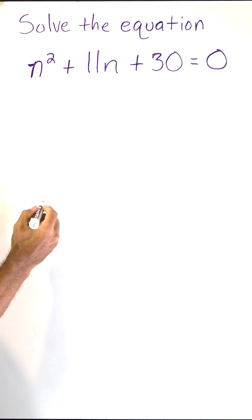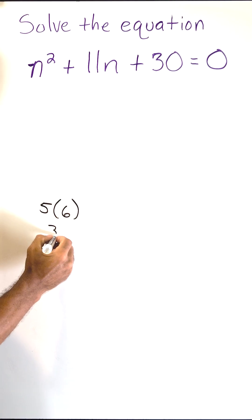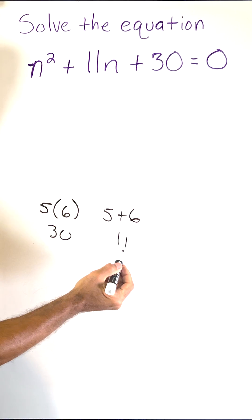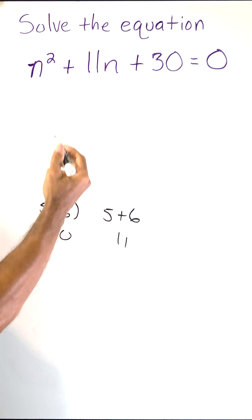And two such numbers that come to mind right away are 5 and 6, because 5 times 6 equals 30. And of course, if we add 5 and 6 together, we get that middle term of 11. So that means that we can solve by factoring.